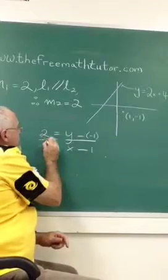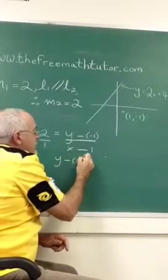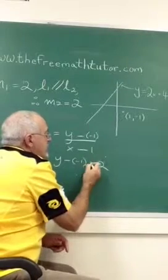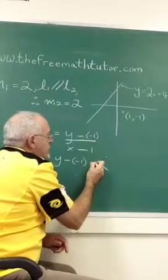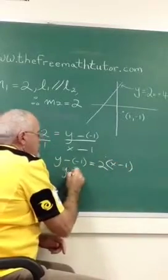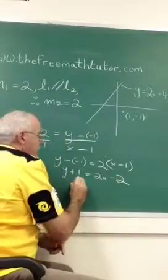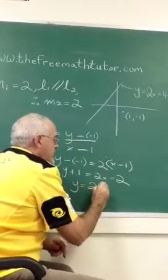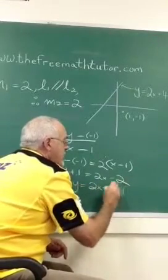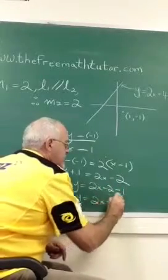Cross multiplying, I get y minus negative 1 is equal to 2 times x minus 1. y plus 1 equals 2x minus 2. y, therefore, is equal to 2x minus 2 minus 1. y is equal to 2x minus 3.